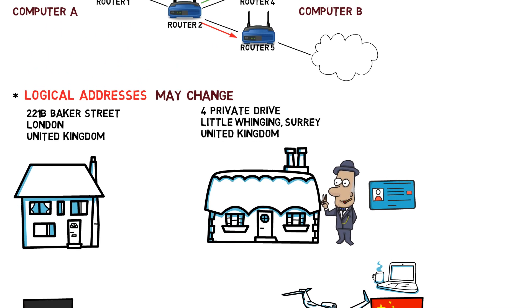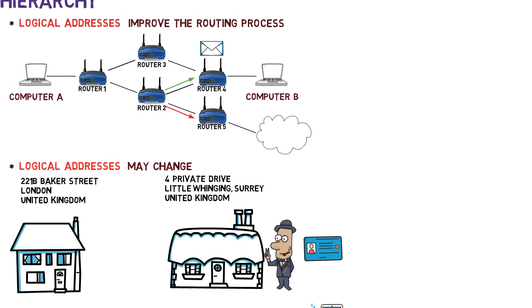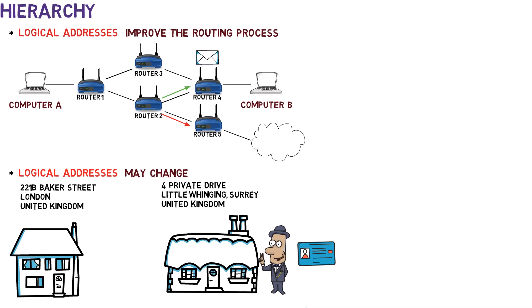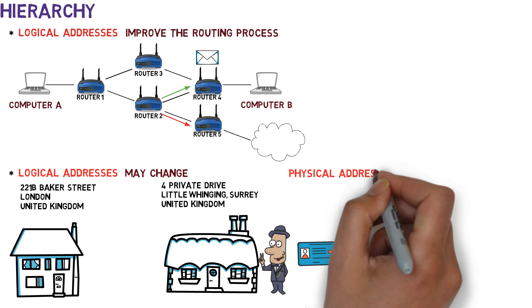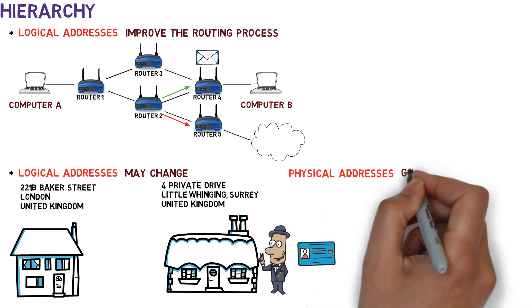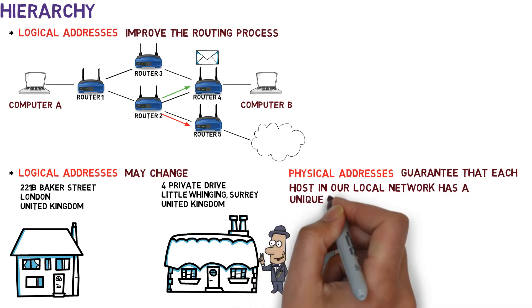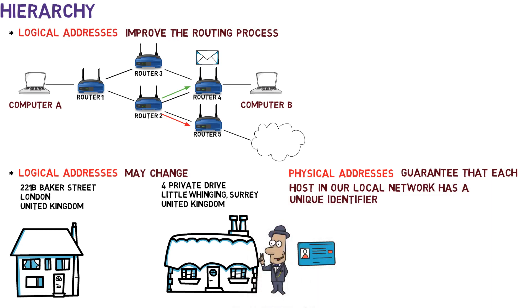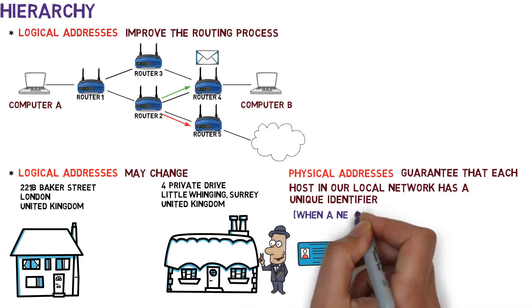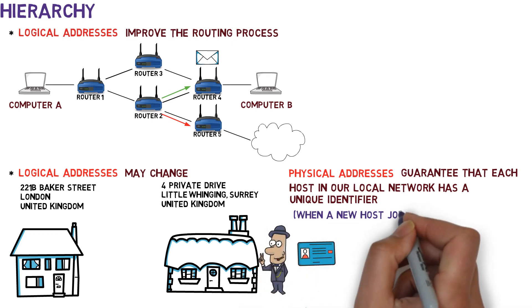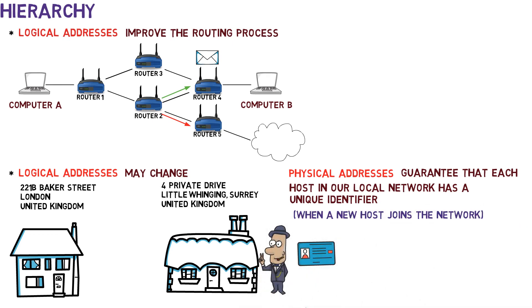These two reasons are the major ones for having logical addresses. Yet keep in mind that we still need physical addresses, as they guarantee that each host in our local network has a unique identifier. This is especially important when a new machine joins the network and doesn't have a logical address yet. At that stage it already has a physical address, which can be used as its identifier, so the host can communicate without first receiving a logical address.